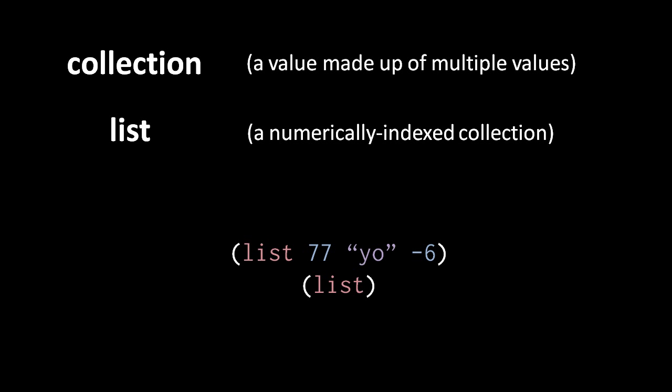To create a list in Pidgin, we use a list operator, whose operands make up the initial members of the list. So here the top expression returns a new list with three items: first the number 77, second string yo, and third the number negative 6. The bottom expression returns a new list with no initial items, in other words, an empty list.